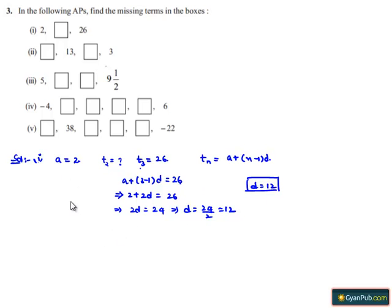We need to find the second term t2, which equals a + (2-1)d, that is a + d = 2 + 12 = 14. Therefore, the second term, the missing box, is 14.